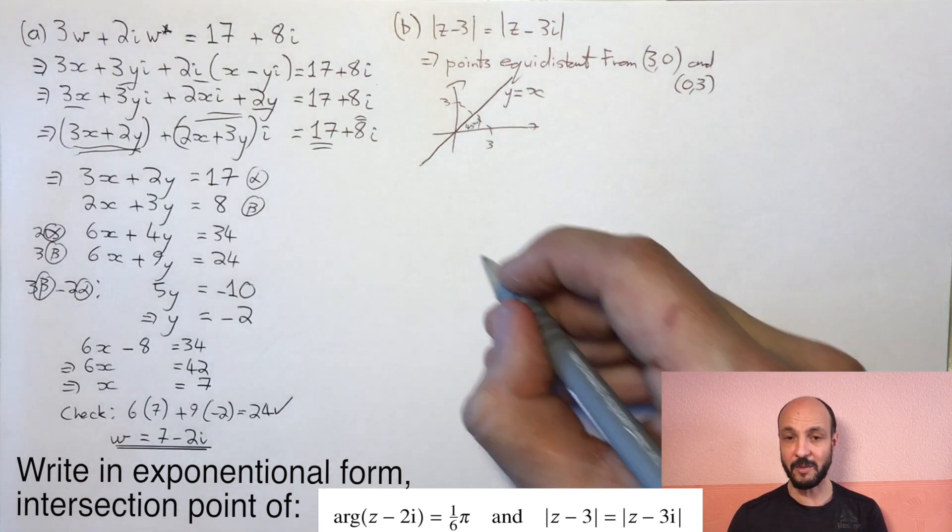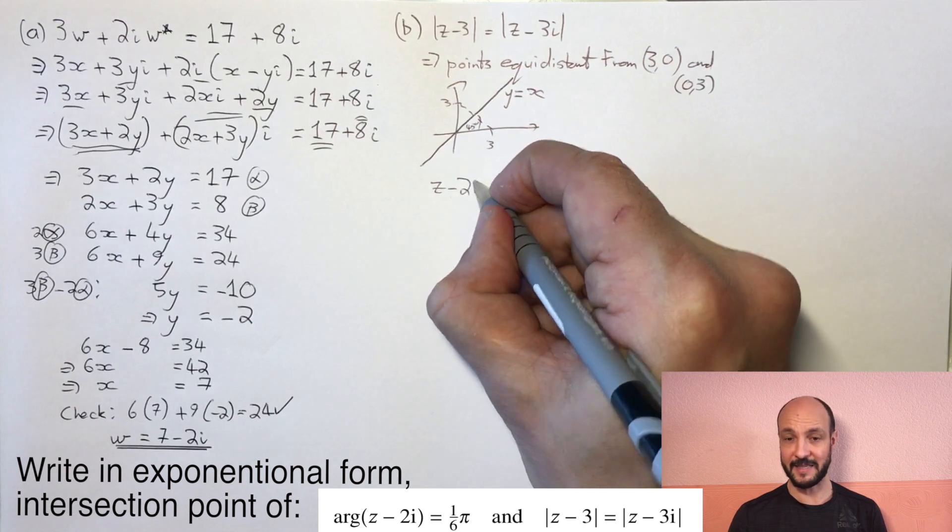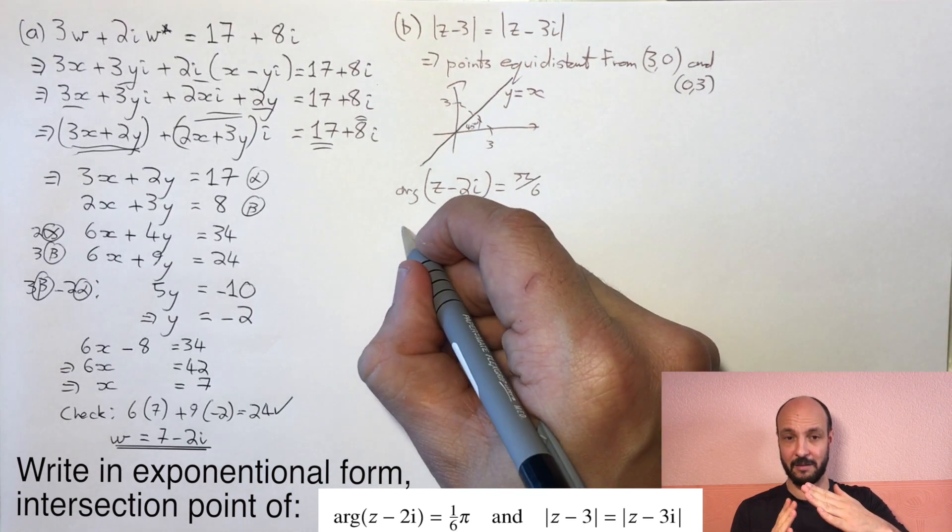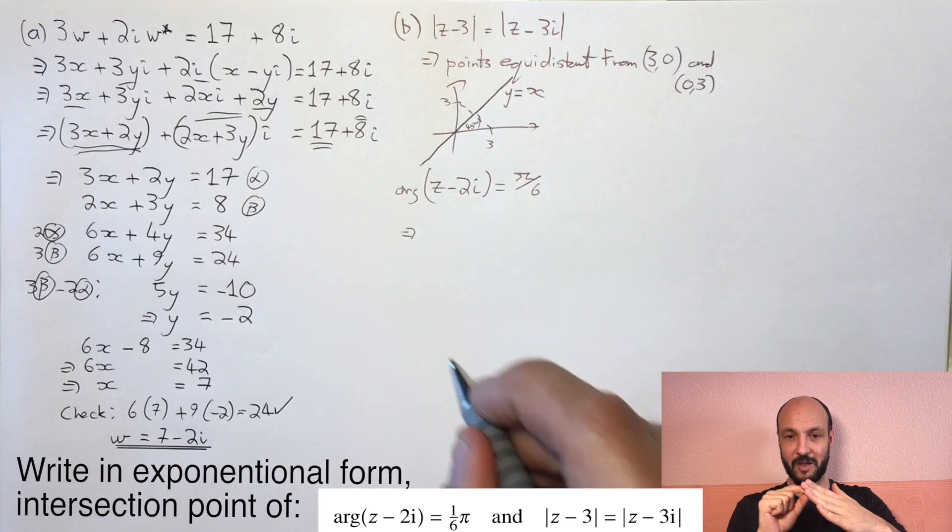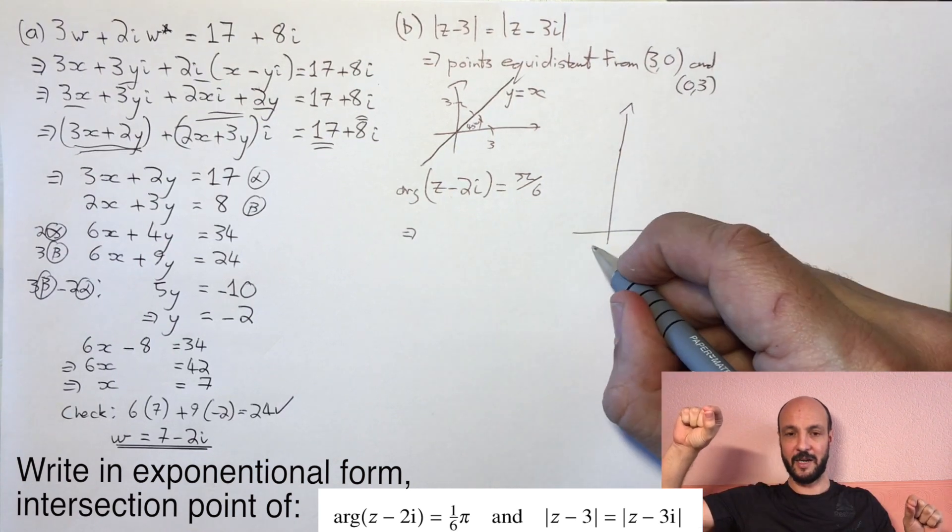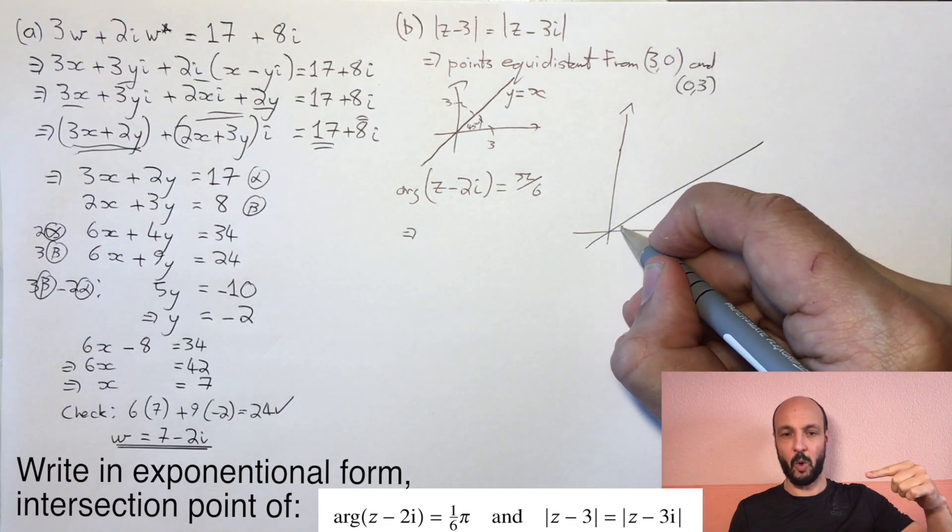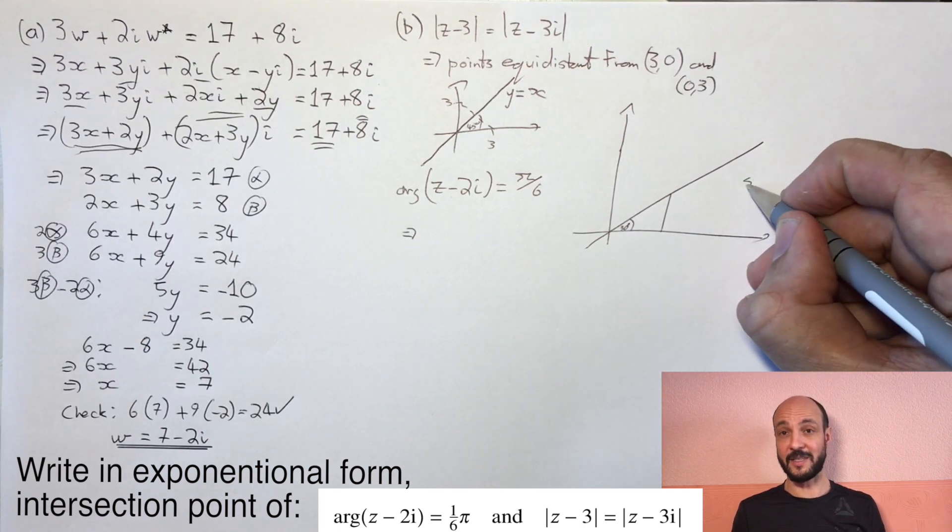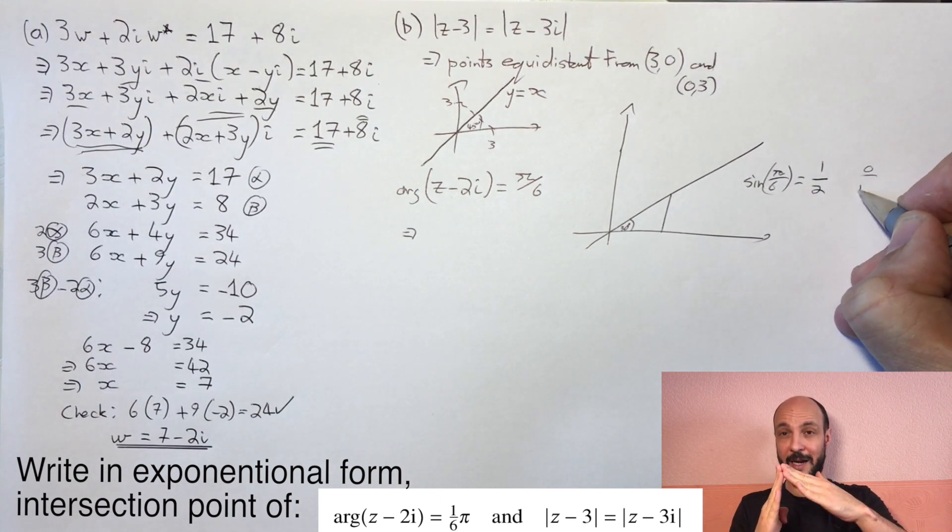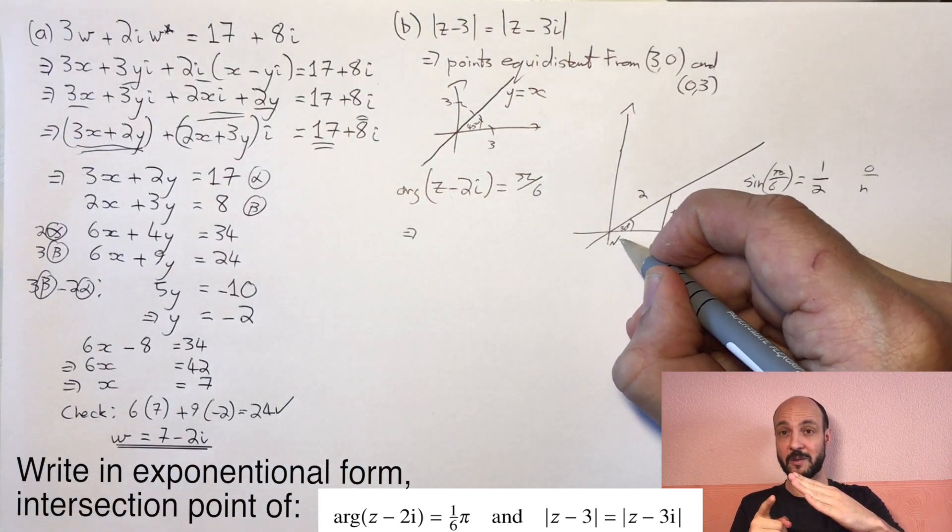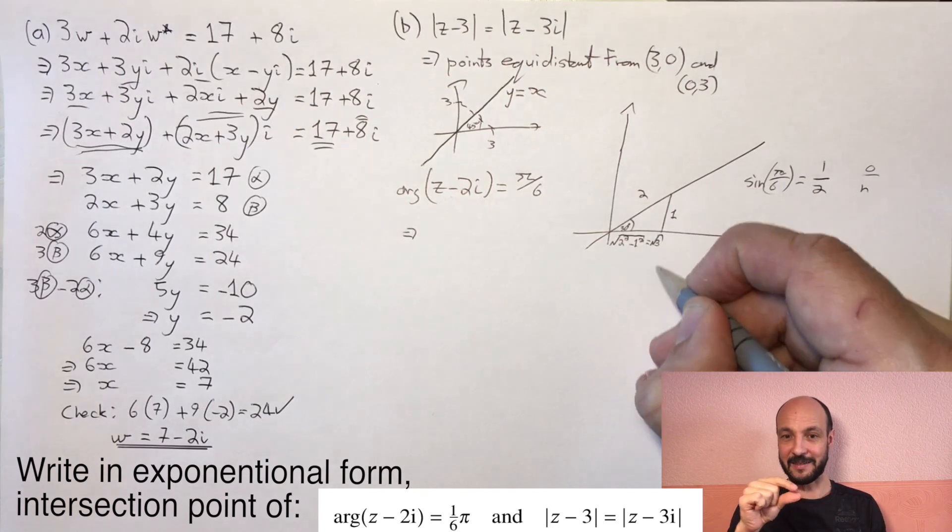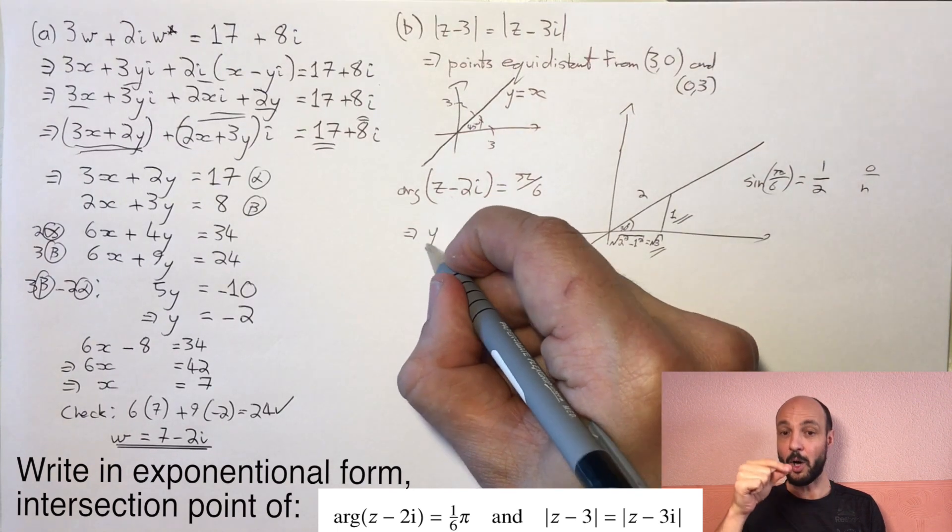The other information we're given, we're told that the argument of z minus 2i is pi over 6, or 30 degrees. Now if we think about this pi over 6, this 30 degrees, this is a standard angle. So if we've got 30 degrees, if we imagine going, if we draw this line on our argand diagram, and we imagine going 1 up, now we know, for instance, the sine of 30 is a half. So sine of 30 is opposite over hypotenuse. So if we've gone 1 up, then we've got 2 on our hypotenuse. So we can do the square root of 2 squared minus 1 squared, the square root of 4 minus 1, which is the square root of 3, that's our x distance. So we can say every time we go across root 3, we go up 1.